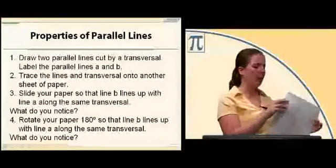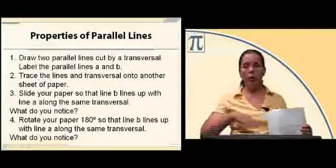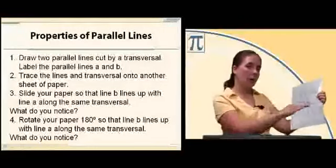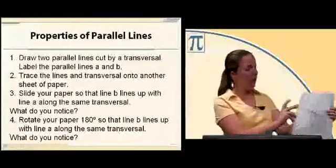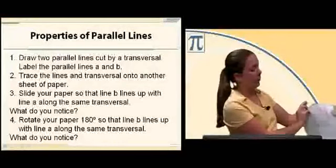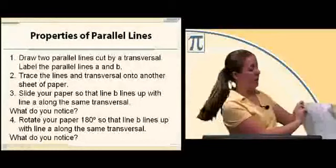Alright, take your clear paper, or your transparency, or your tracing paper, and put it on top, and trace your parallel lines along with your transversal, and then just label your angles. Notice I labeled them the same: 1, 2, 3, 4, and then my second set, 5, 6, 7, 8.